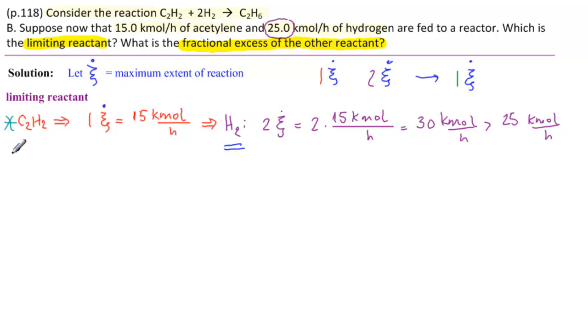Since H2 is the limiting reactant, then we say to ourselves, this means that 2ξ dot is equal to 25 kilomoles per hour, which would imply that ξ dot is equal to 25 divided by 2 kilomoles per hour equal to 12.5 kilomoles per hour.